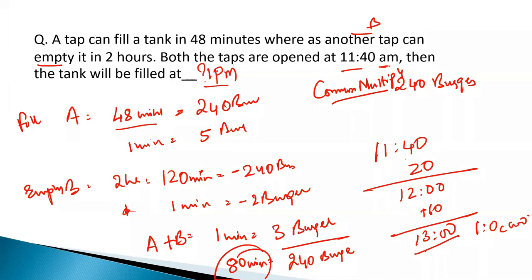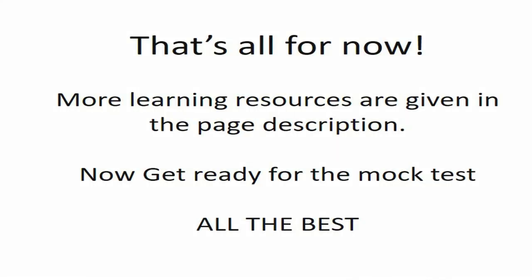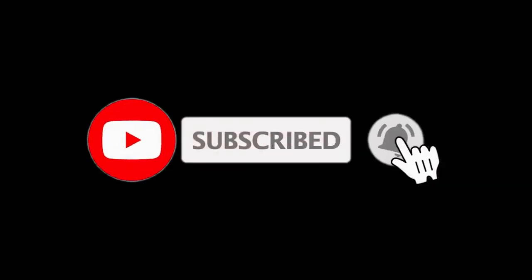By this I end my video. I suggest you assume a common multiple of the numbers given in the question — it makes your job more easy. The burgers can be replaced with chocolates, gallons, pizza, anything. The point is to assume the right value. Thank you for watching.